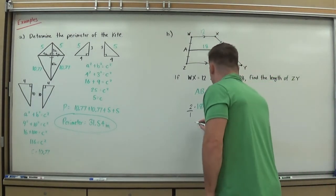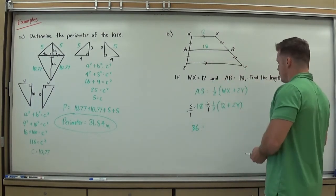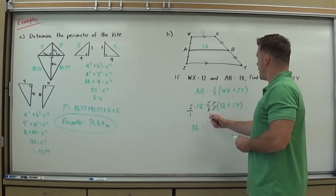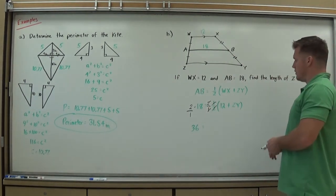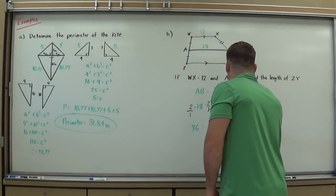Eighteen times two is thirty-six. When I do this here, two over one times one half, it's all going to cross out, so now I have nothing in front of my parenthesis, which means I no longer even need those parenthesis. I'm just left with that twelve plus ZY.